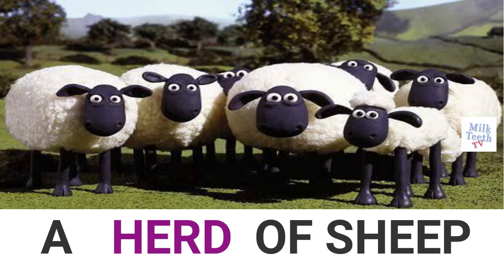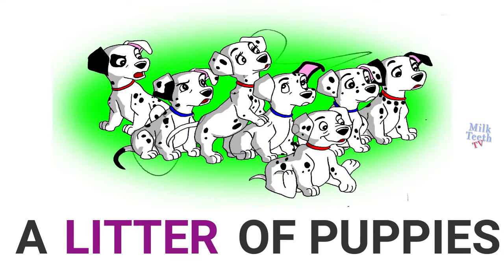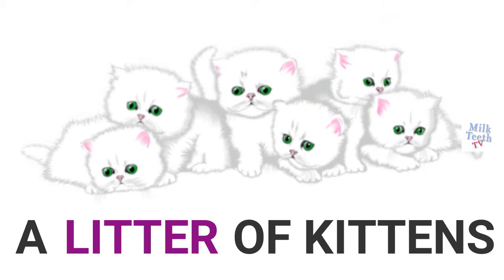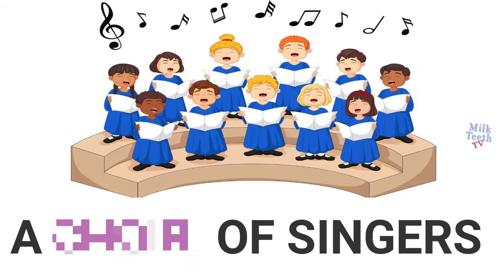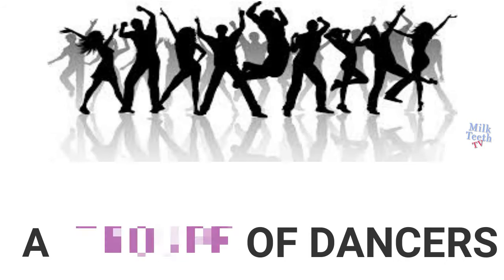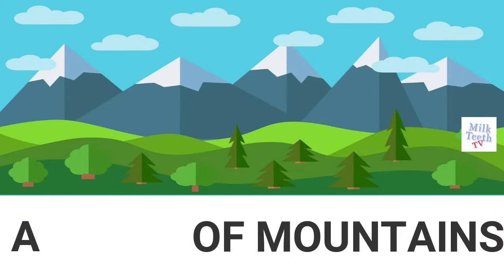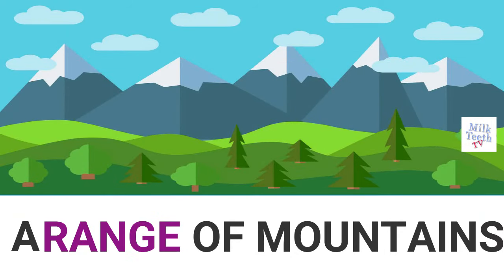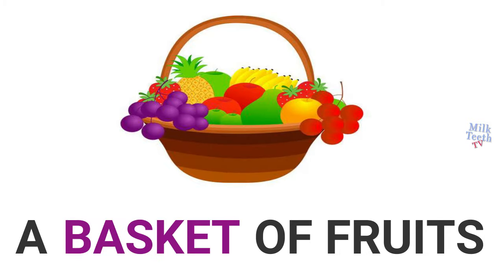This is easy. A herd of sheep, a litter of puppies, and same to it is a litter of kittens, a choir of chickens, a choir of singers — do you have it in your school? A troop of dancers, a range of mountains — have you seen it? A basket of fruits, we all love it.